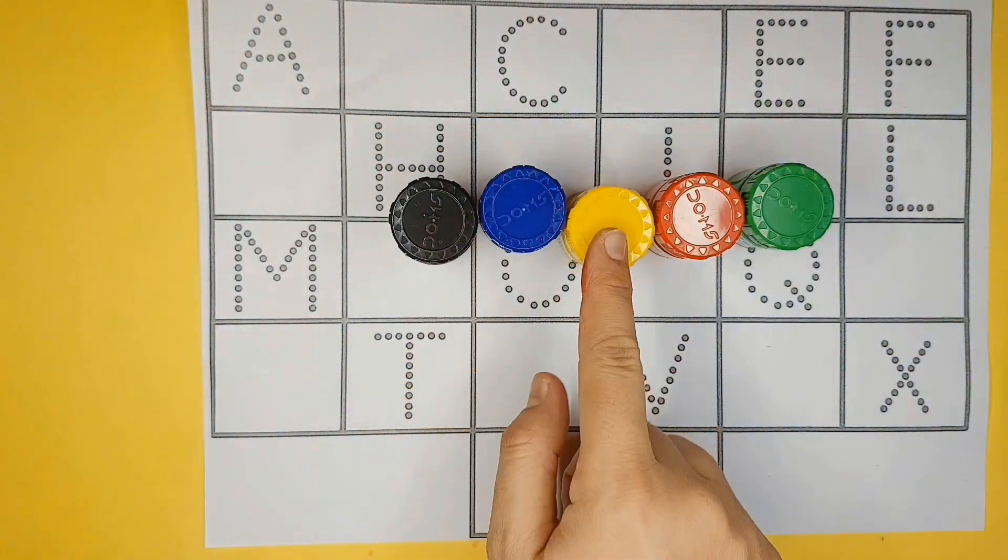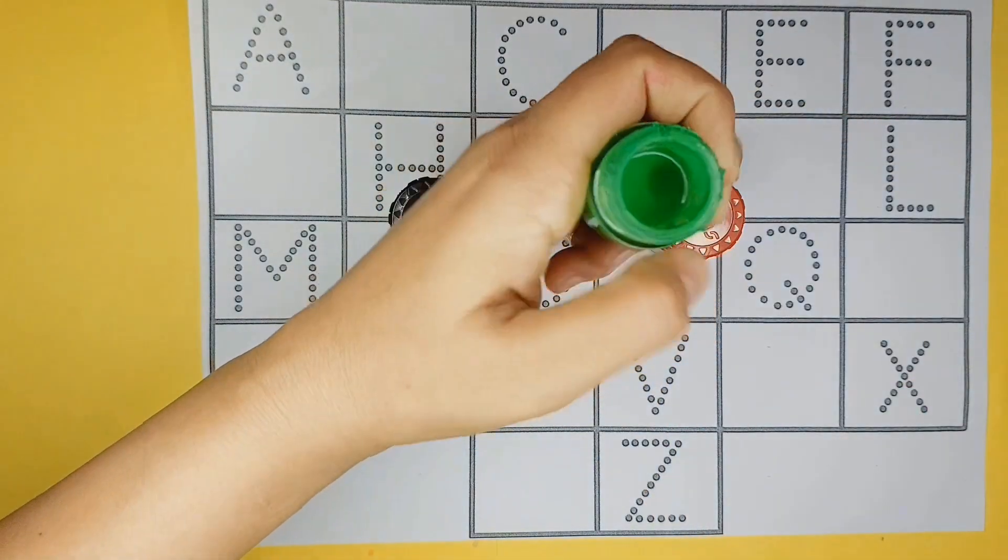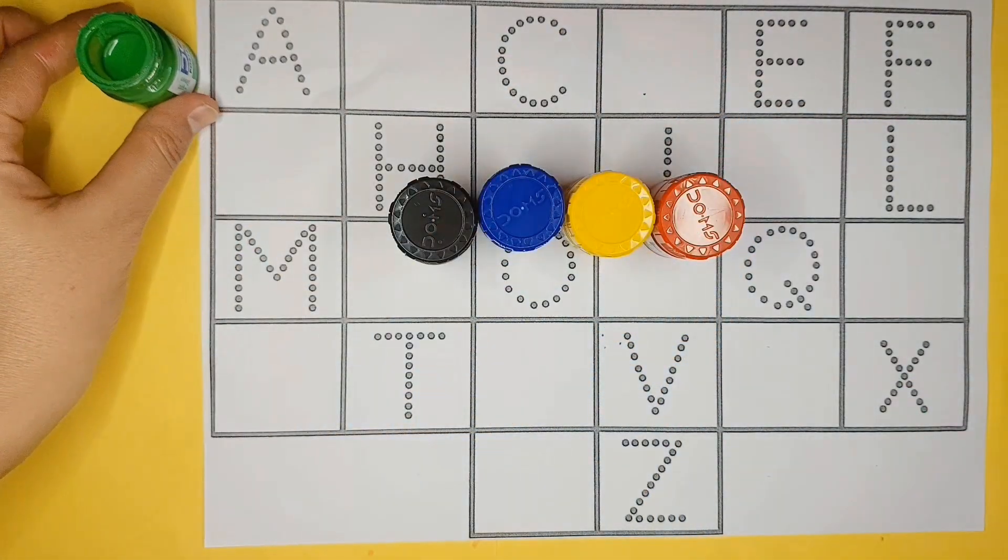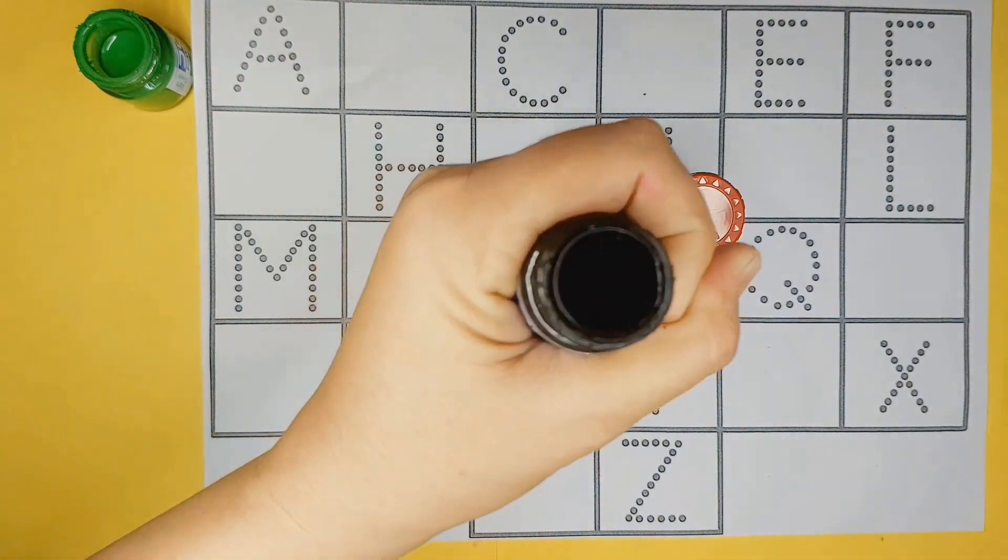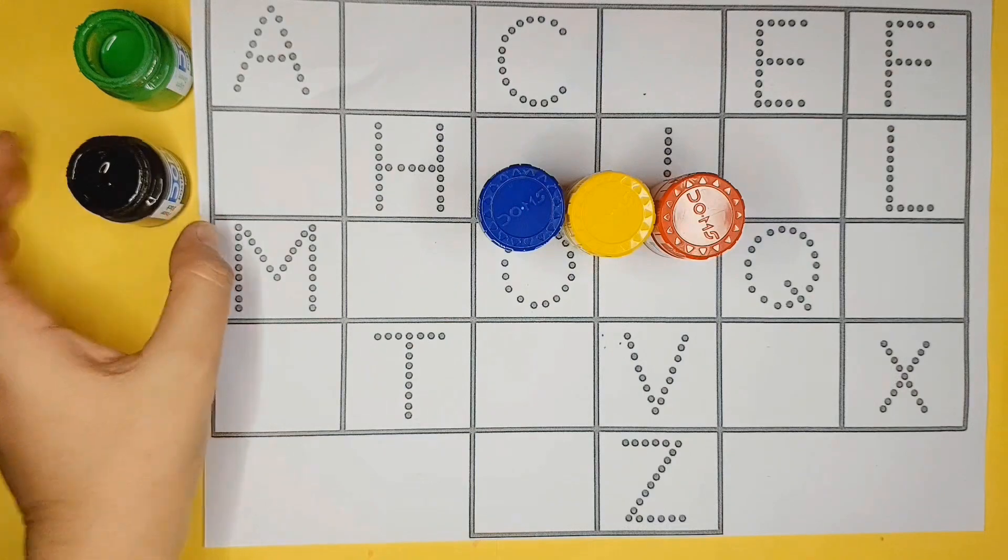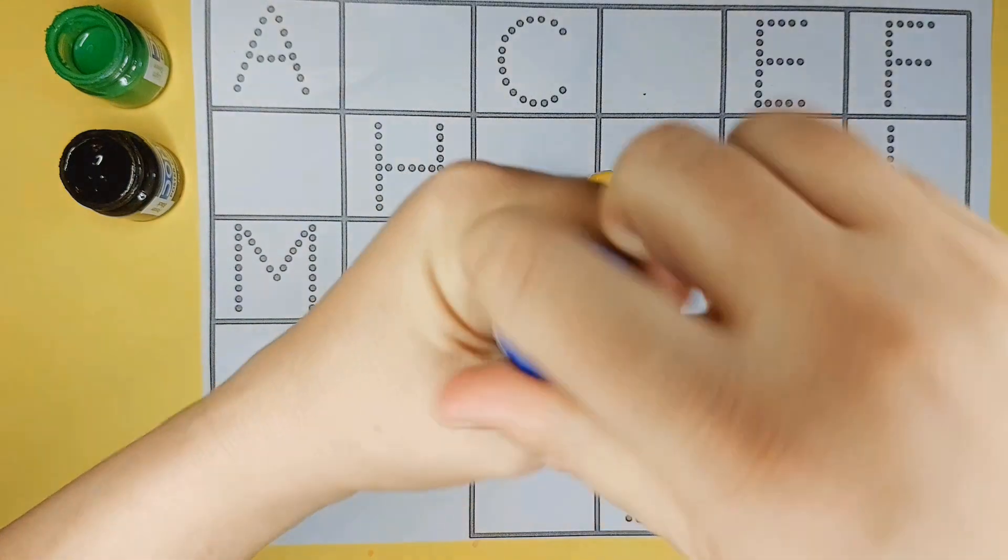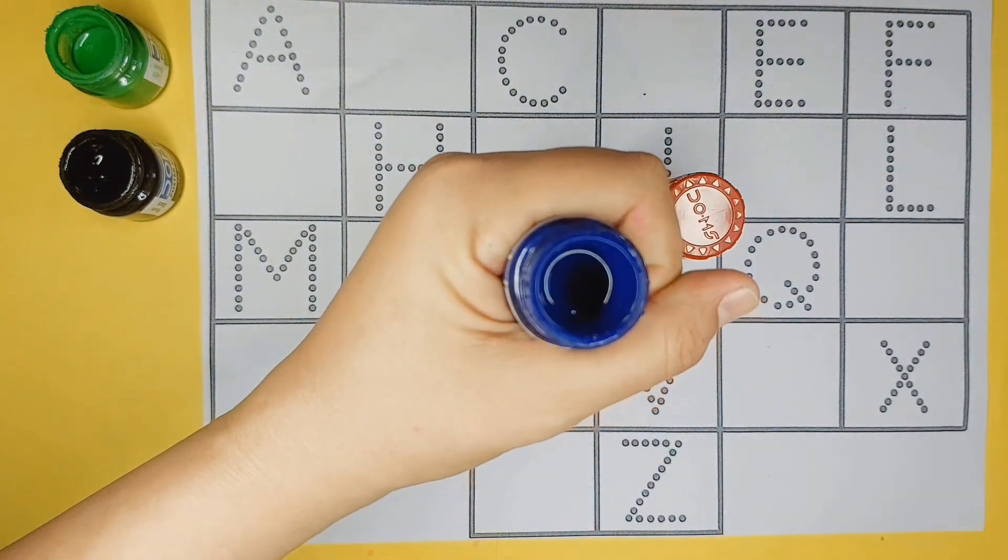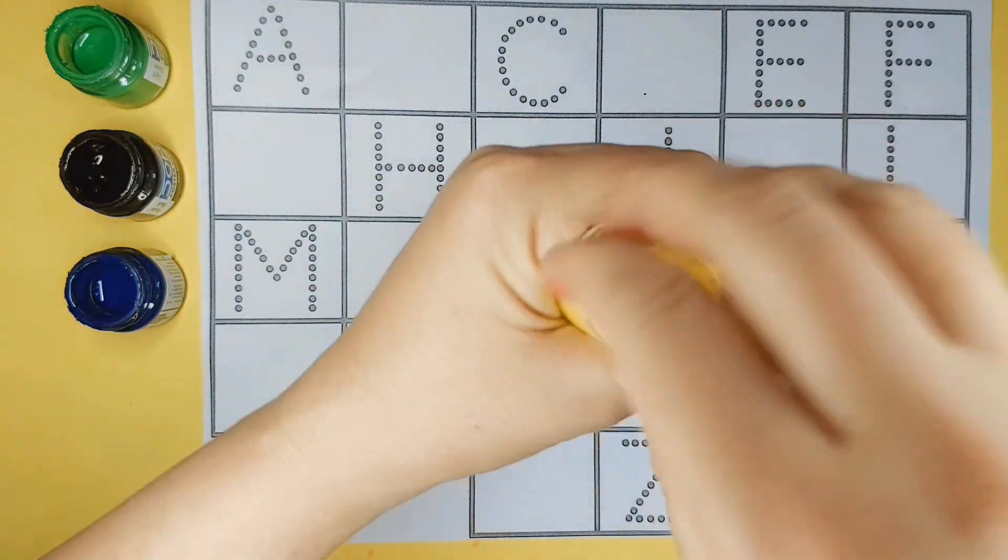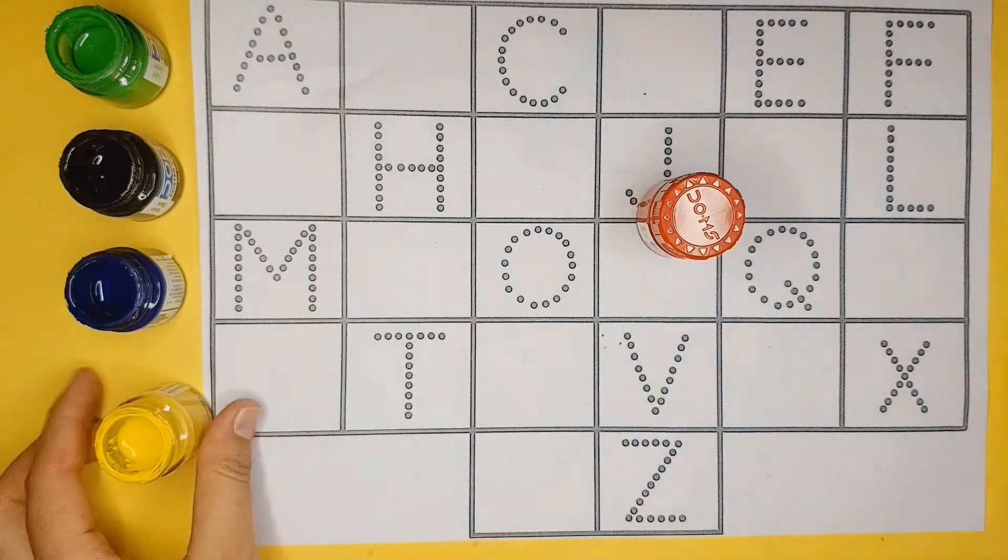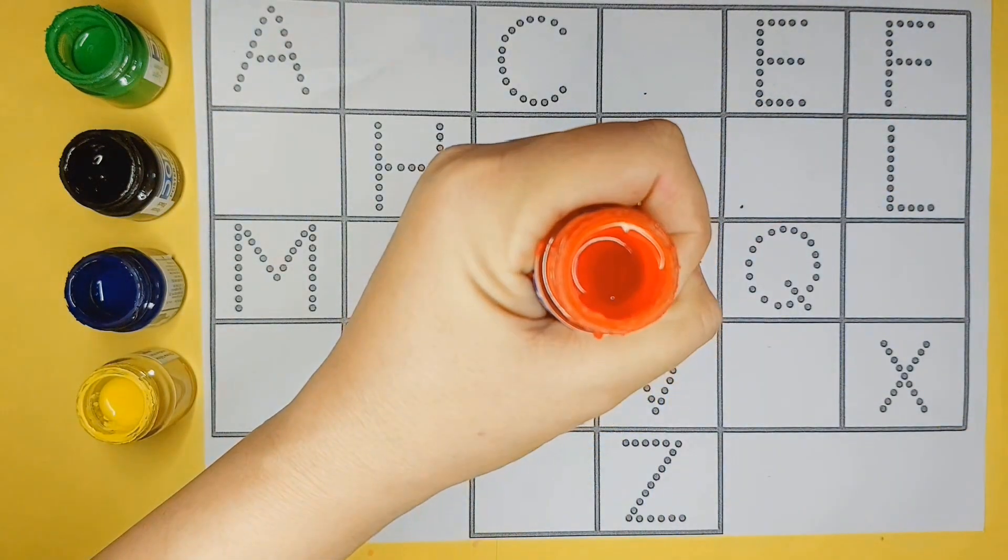Let's learn some color names. Green color, black color, blue color, yellow color, red color.